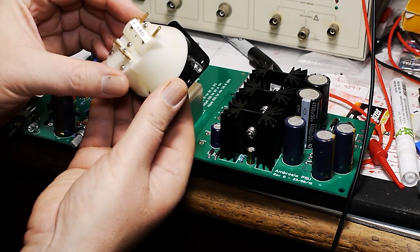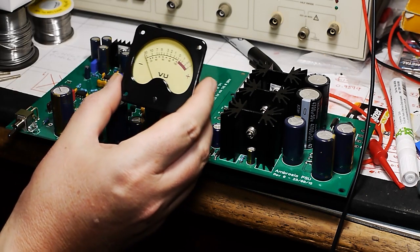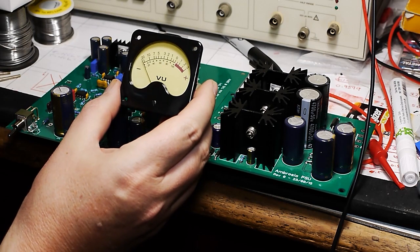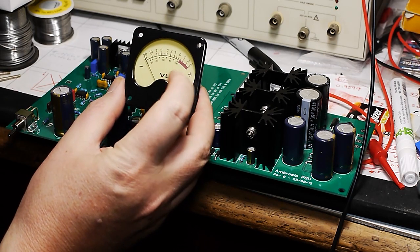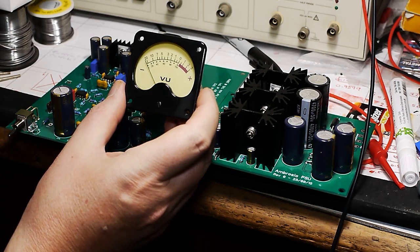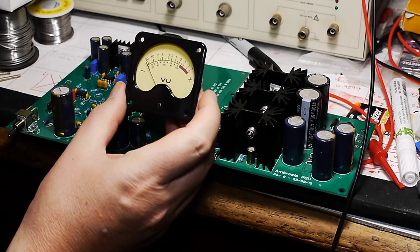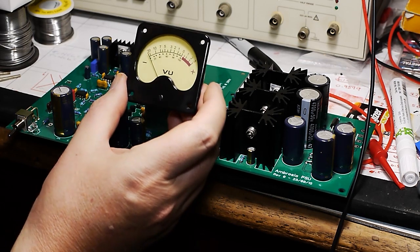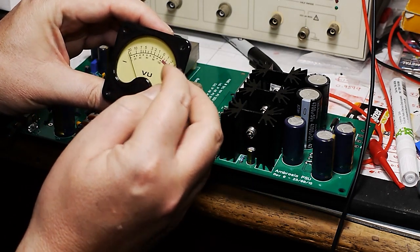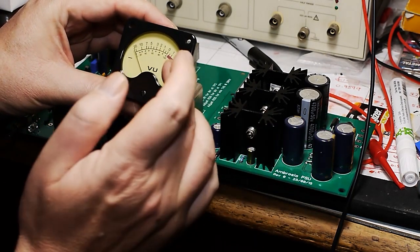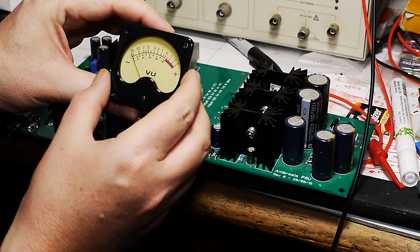My concept is one of the things if I'm going to use VU meters, I want them to have the right sort of ballistics. I want that slow response that you get from a VU meter. But then you really do need some kind of peak indication, and it's really rather difficult to retrofit the little LED on the face that some meters had.